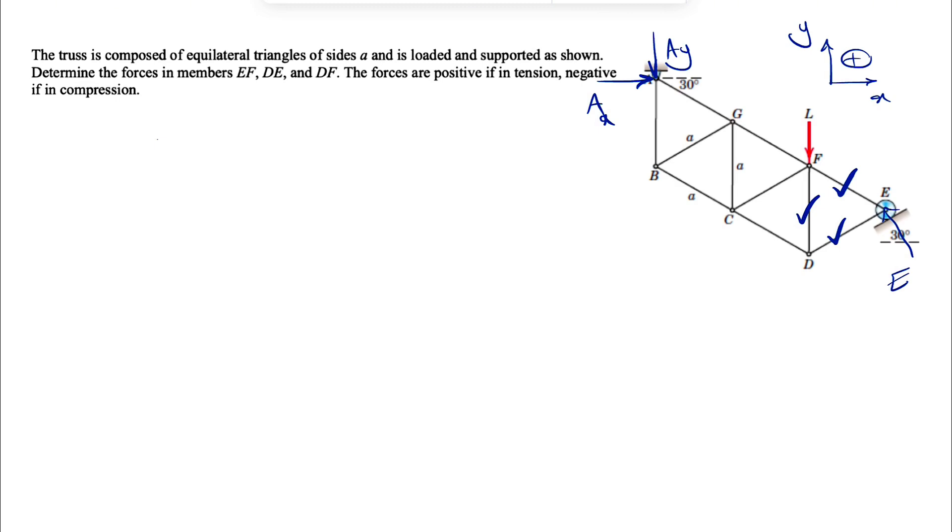But it makes sense to start with our moment equation, since we have most of our unknowns at point A, so we're going to do the moment about that point, so that way we can get rid of AX and AY.